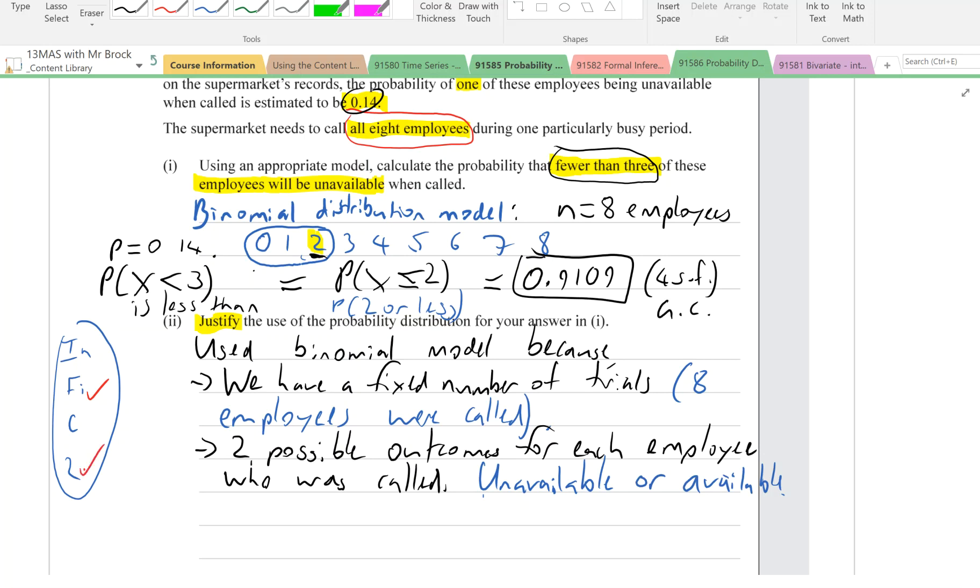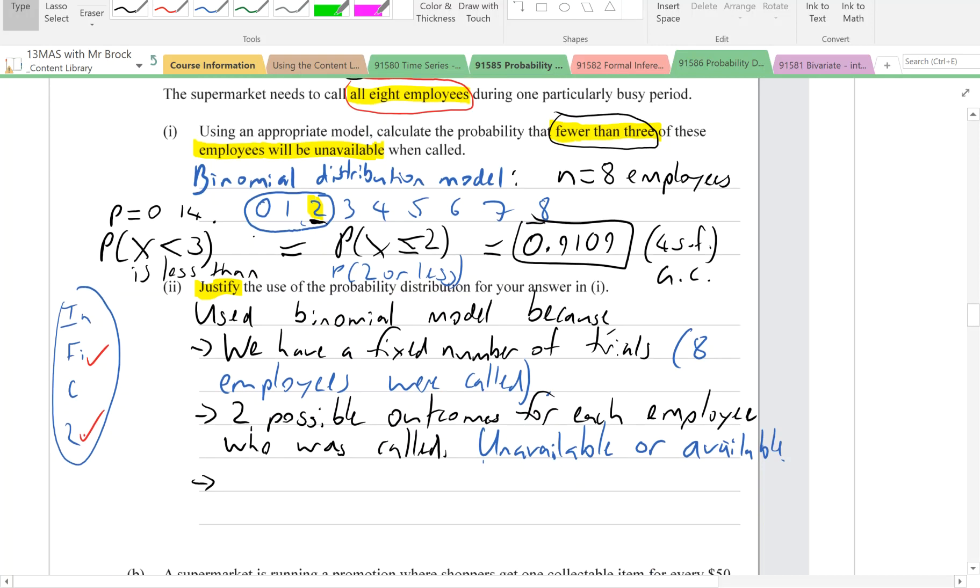Next, we've got independent and constant probability of success. They're usually the two we leave till last because often they're less clear cut. It's always easier to start with something that's a bit more clear cut.